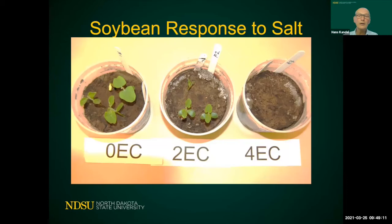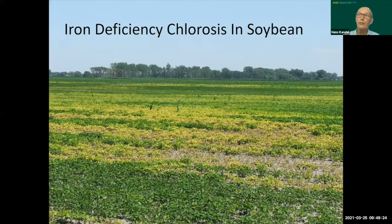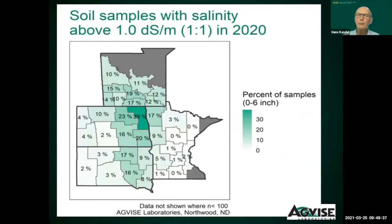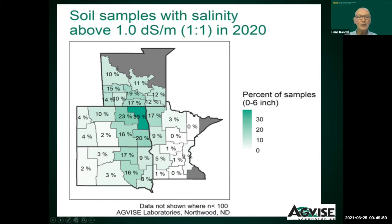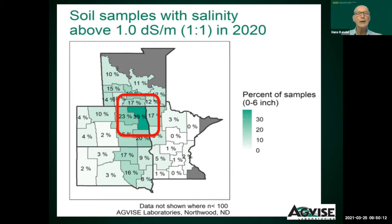Soybeans and dry beans are very sensitive to salts — they don't even germinate when there are salt issues. Salt also has an influence on the expression of iron chlorosis in soybean, which is the inability to take up iron. I got data from AgVis showing soil samples with salinity levels above the threshold where we can expect negative effects. In the Red River Valley Northern area, 39% of samples come in with high salt levels; in the Southern Valley, 20%. High salt levels are prevalent going all the way up into Canada.